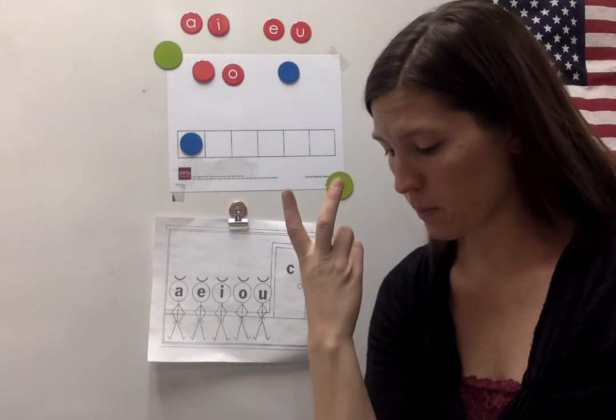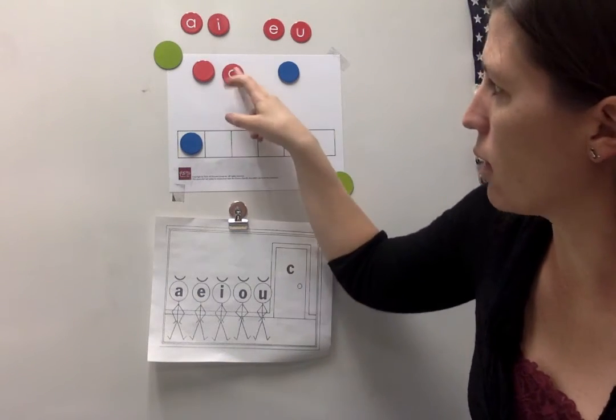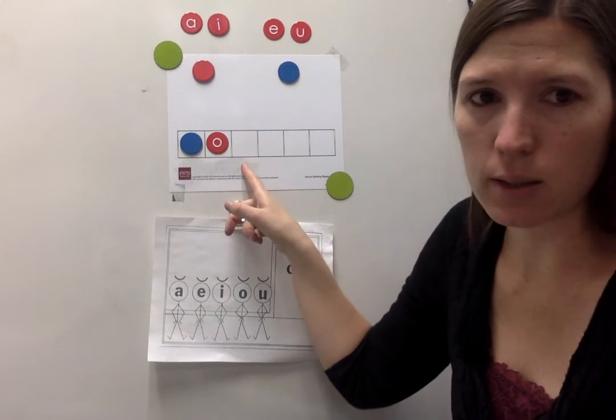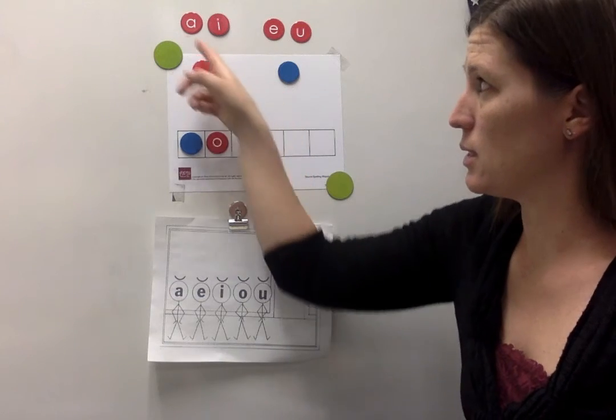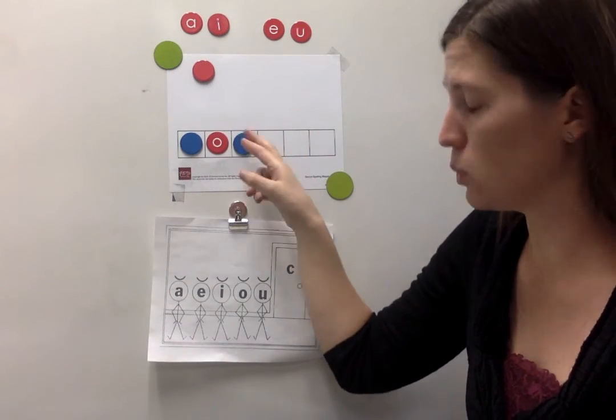My middle sound is my vowel. AH. What color chip do I need? Red O. N-O-D. D is my last sound. D is not a vowel sound. It is a consonant sound. So I'll use the blue consonant chip.